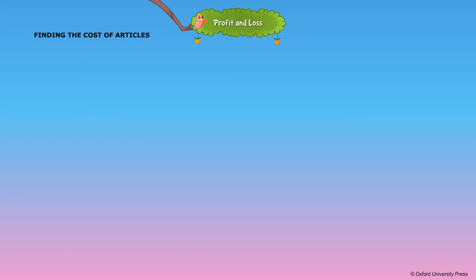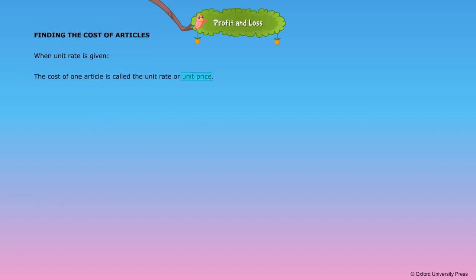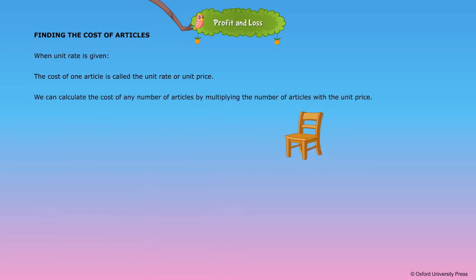Finding the cost of articles when the unit rate is given: the cost of one article is called the unit rate or unit price. We can calculate the cost of any number of articles by multiplying the number of articles with the unit price.